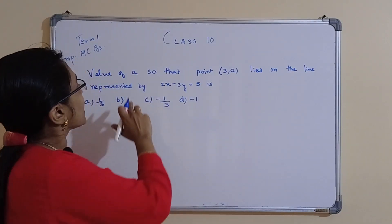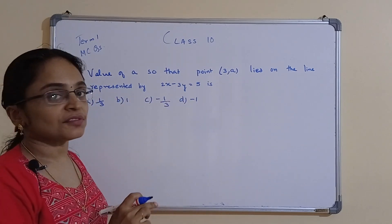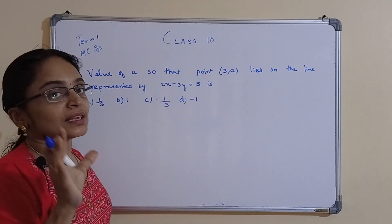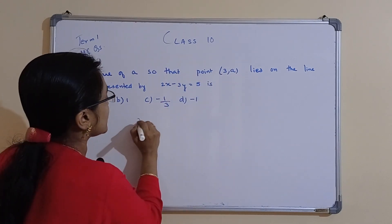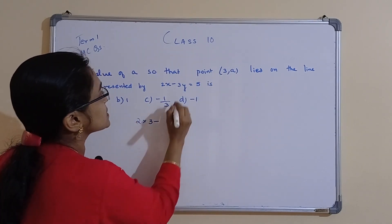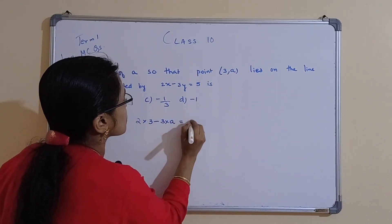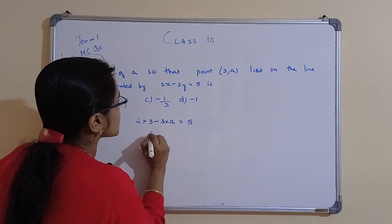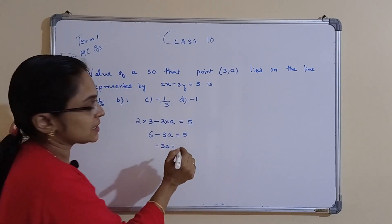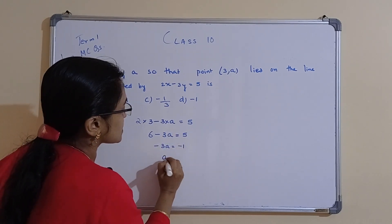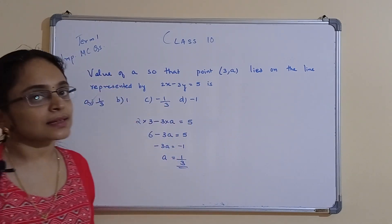Next: find the value of a so that (3, a) lies on the line 2x − 3y = 5. Substituting x = 3: 2(3) − 3a = 5, so 6 − 3a = 5, giving −3a = −1, so a = 1/3. Option A is correct.